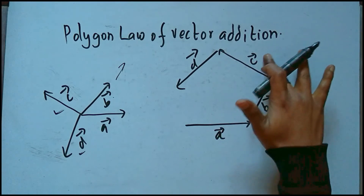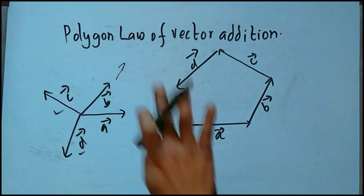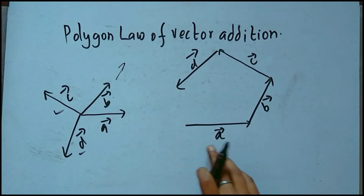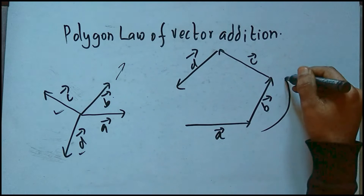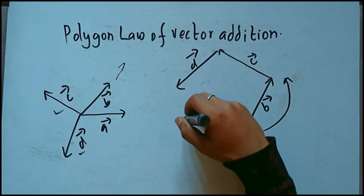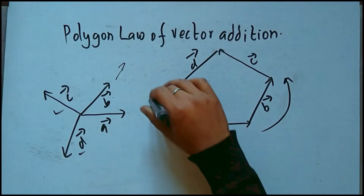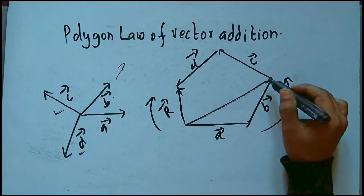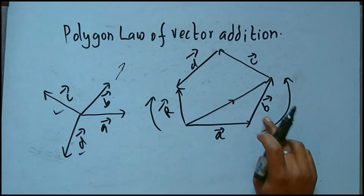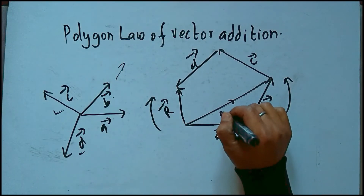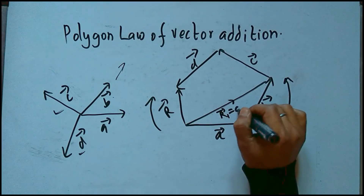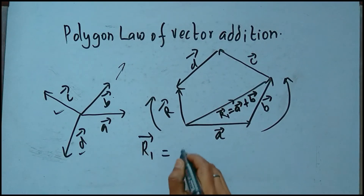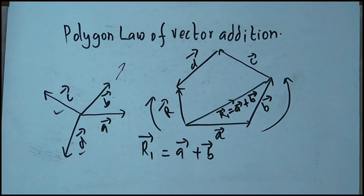To find the resultant of these vectors, we use the polygon law. Polygon law is based on triangle law and parallelogram law. These vectors are plotted in the same order, going anticlockwise, so the closing side drawn in the opposite order is the resultant. If vectors A and B are represented in the same order, then by triangle law, the resultant vector R1 equals vector A plus vector B.